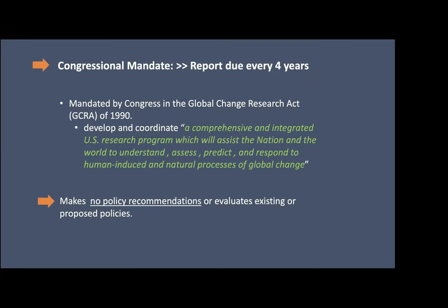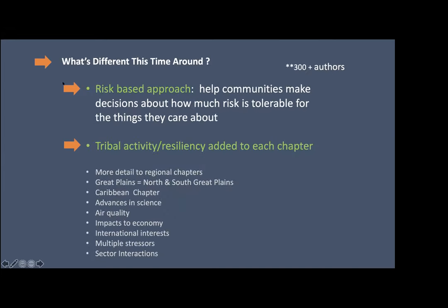Preparations are starting to roll out for the fifth climate assessment. What's different this time from previous assessments is that it takes a risk-based approach to climate impacts, helping communities make decisions about how much risk is tolerable for the things they care about. The risks vary in intensity, but it helps you visualize your communities within that risk space. Tribal activity and resiliency case studies were also added to each chapter of the national climate assessment.